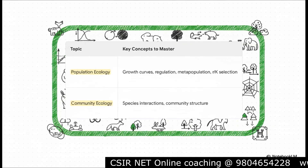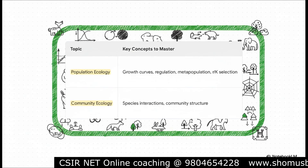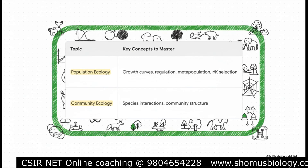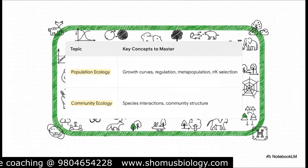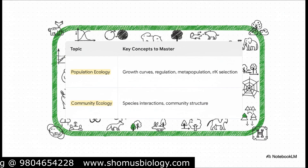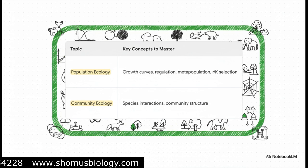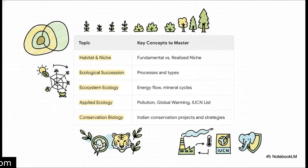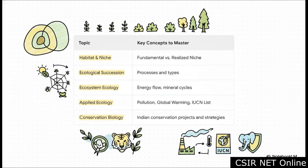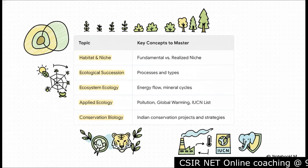Let's start in the green zone — these are the heavy hitters, the absolute core of Unit 10. Population ecology is huge: we're talking everything from growth curves and r/K selection to metapopulations. Right there with it is community ecology, which is all about species interactions and community structure. If you master these two, you are already way ahead. Next up are the yellow topics — super important because they provide crucial context and are a frequent source of questions. You need to know the difference between a fundamental and a realized niche, the process of ecological succession, and how energy flows through ecosystems. Also critical here is applied ecology — think pollution, the IUCN list, and conservation biology — and pay special attention to India's conservation projects.